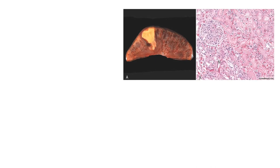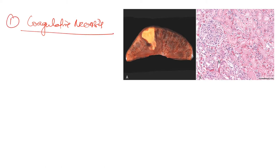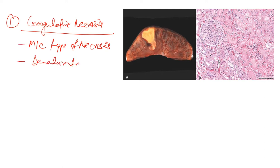Coagulative necrosis is the most common type of necrosis. It happens due to denaturation of proteins. And where does it happen? It happens in solid organs — organs that do not have cystic space, unlike luminal organs.